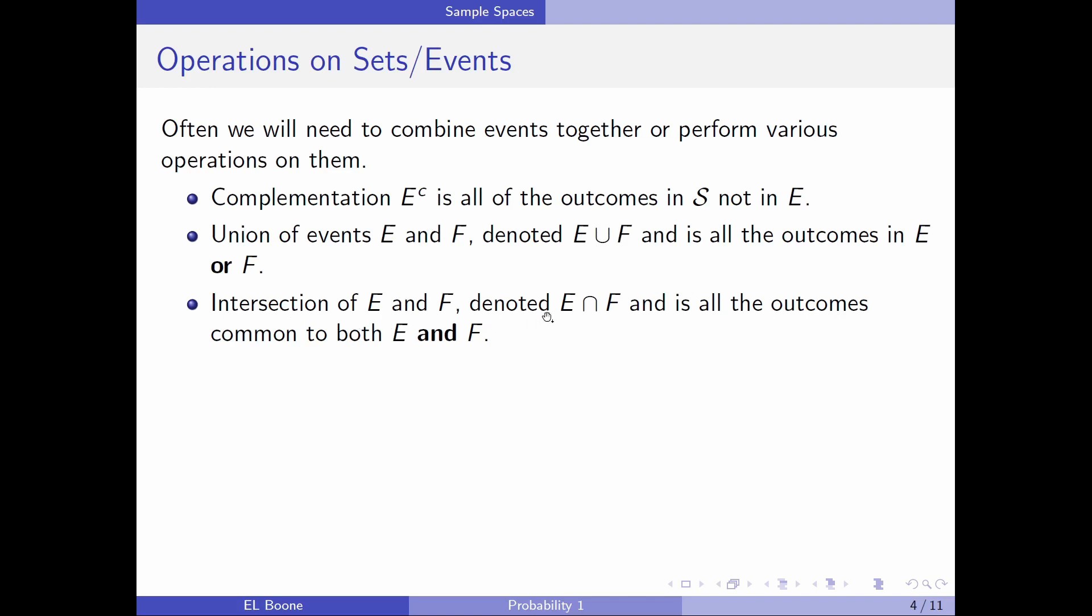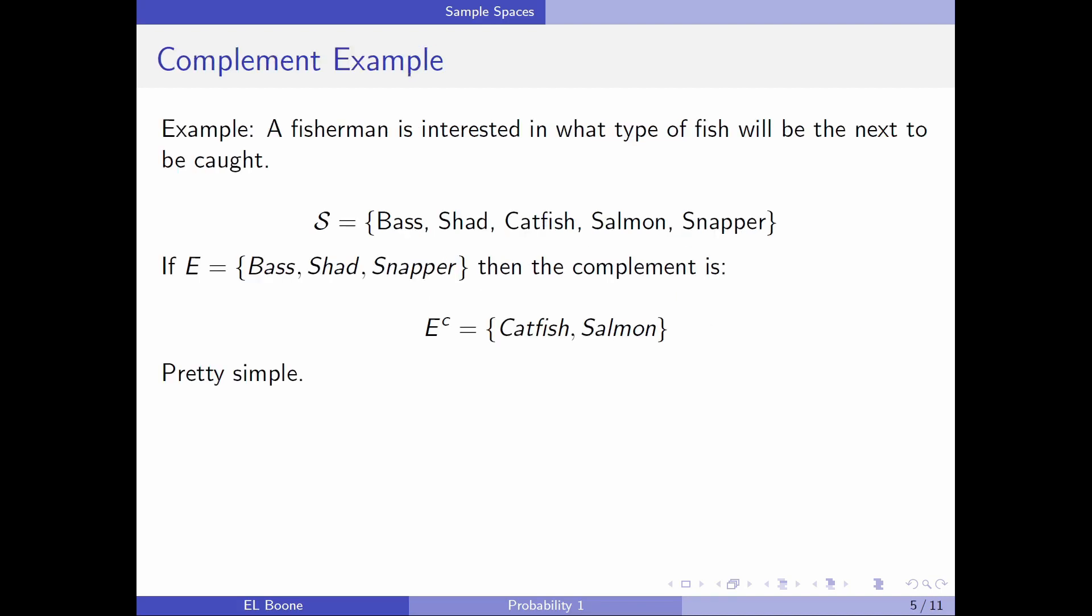The intersection of E and F, denoted E with this overarch, is all the outcomes that are common to both E and F. And the key words here are OR and AND. So if you're familiar with logic, OR and AND shows up a lot. And here's the word NOT. So if you're familiar with logic, it'll hopefully help you understand this.